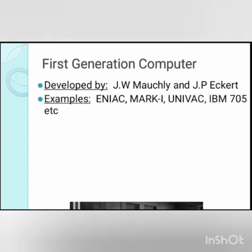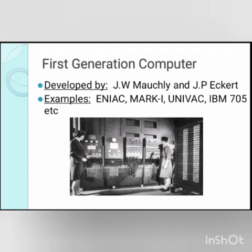J.P. Eckert and J.W. Mauchly invented the first successful electronic computer called ENIAC. ENIAC stands for Electronic Numerical Integrator and Calculator. Examples include ENIAC, EDVAC, UNIVAC, IBM 701, IBM 705, IBM 650, and MARK 1. They needed lots of electricity, so they overheated and often broke down. They were very huge — equivalent to a room — and could perform 100 instructions per second. Magnetic tape was used as a storage device in first generation computers.